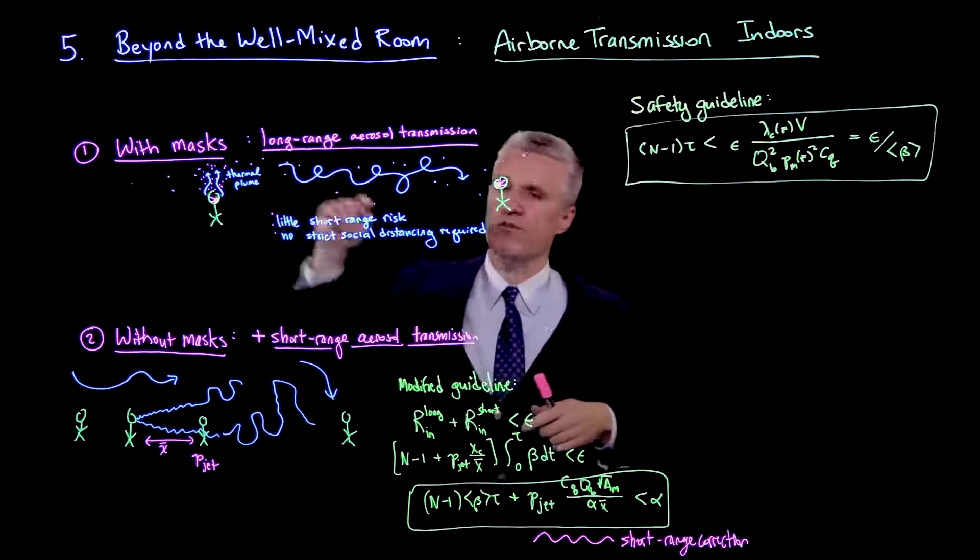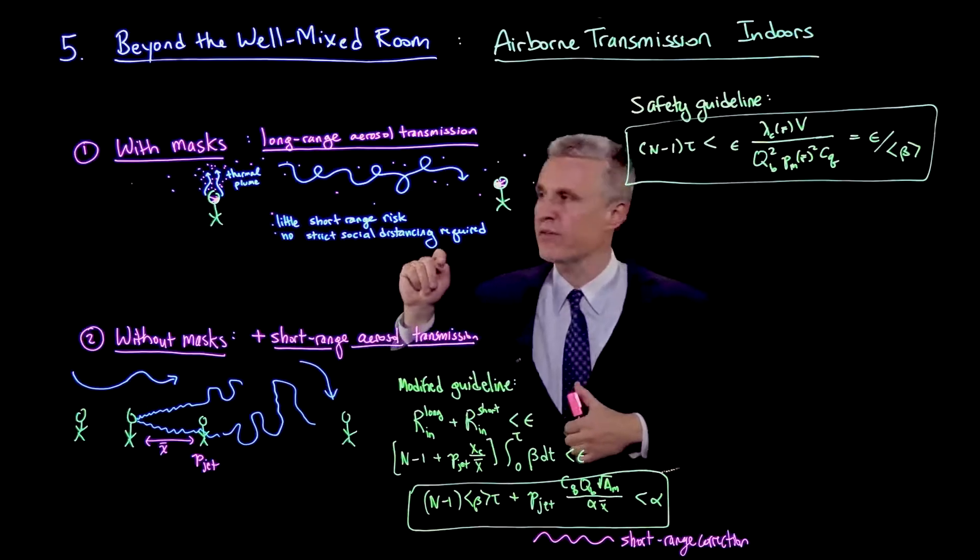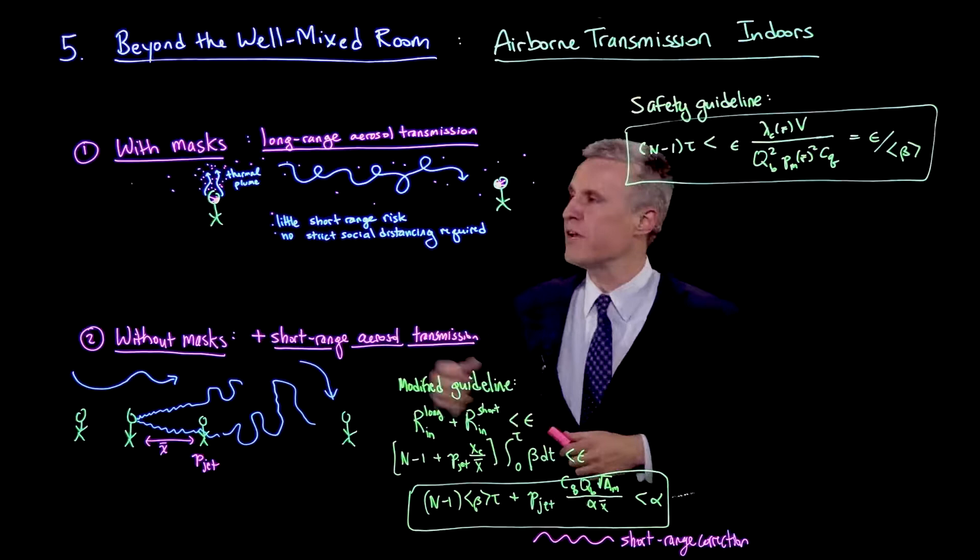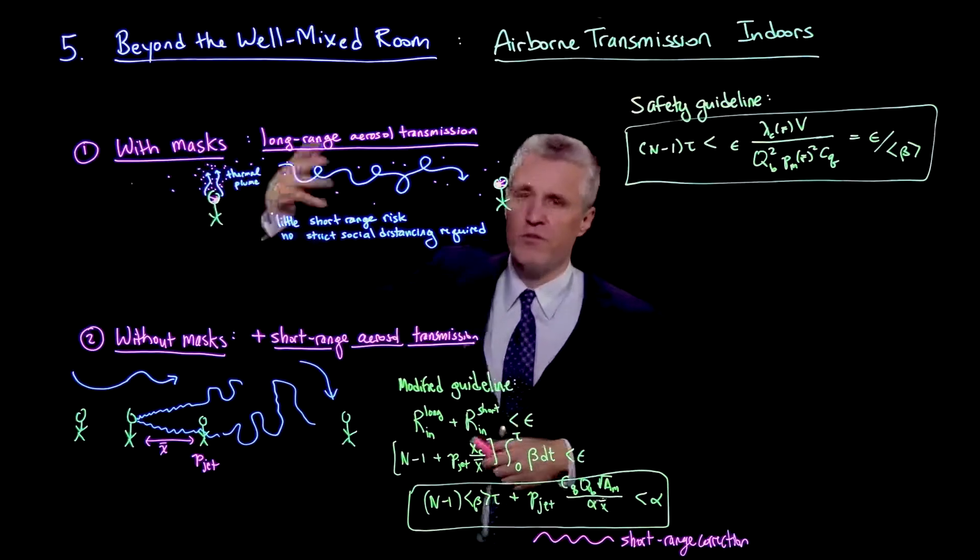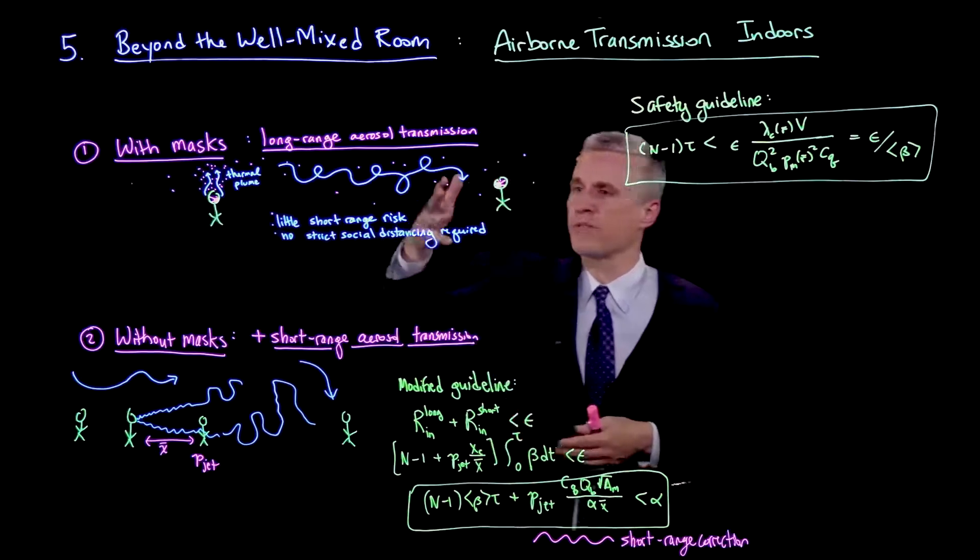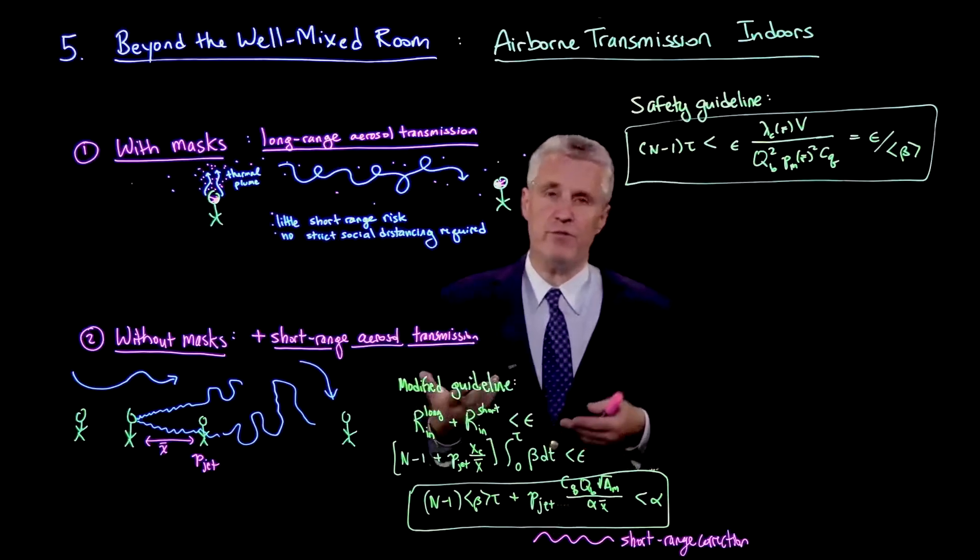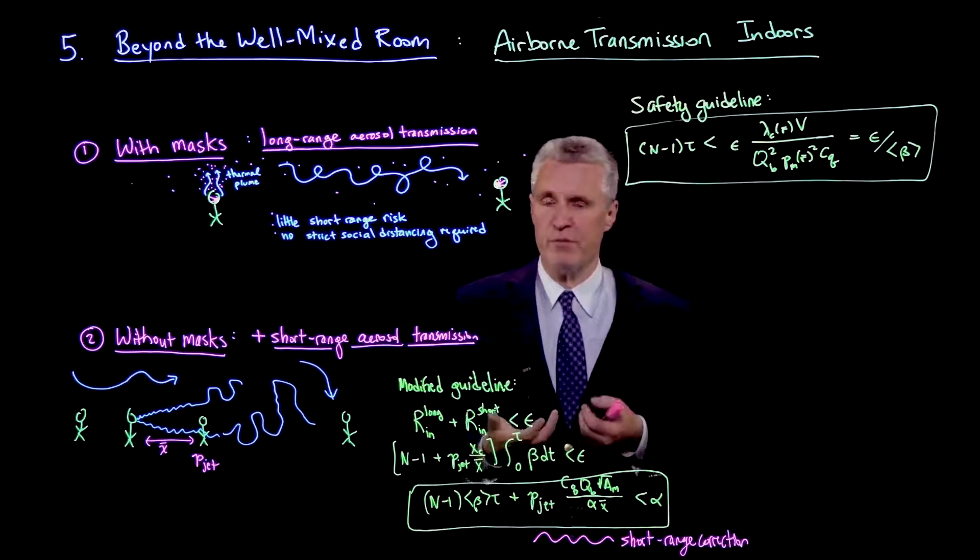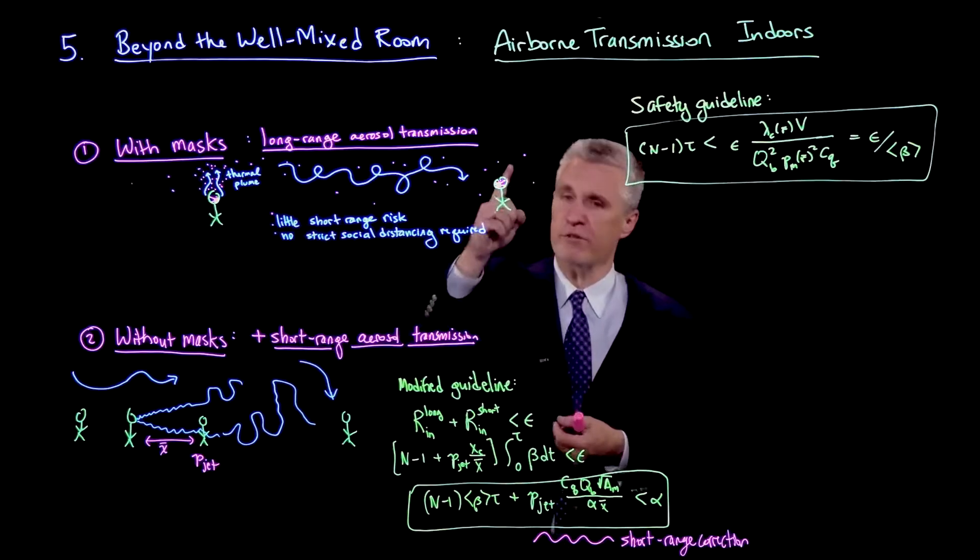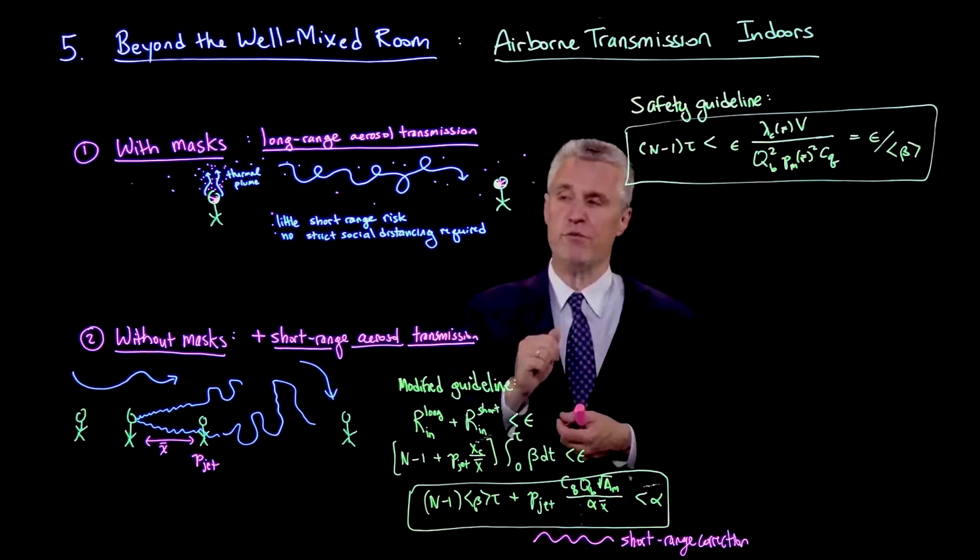We're not likely to directly infect anybody by that method, either because people aren't close enough or they aren't above the other person. And then, of course, there are other flows in the room that we've discussed, which are often turbulent. And those will transport the droplets everywhere and will lead to the well-mixed room as being the most natural and most accurate first approximation for the infection risk by another person who is also wearing a mask.